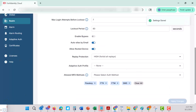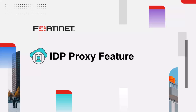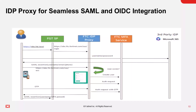The FortiIdentity Cloud IDP proxy feature simplifies SAML and OIDC integration by acting as a bridge between identity providers and service providers, functioning as an IDP to service providers and as an SP to identity providers, streamlining identity management. This allows seamless integration of applications using standard SSO protocols without custom configuration, and enables advanced features like adaptive authentication without requiring updates to downstream systems.